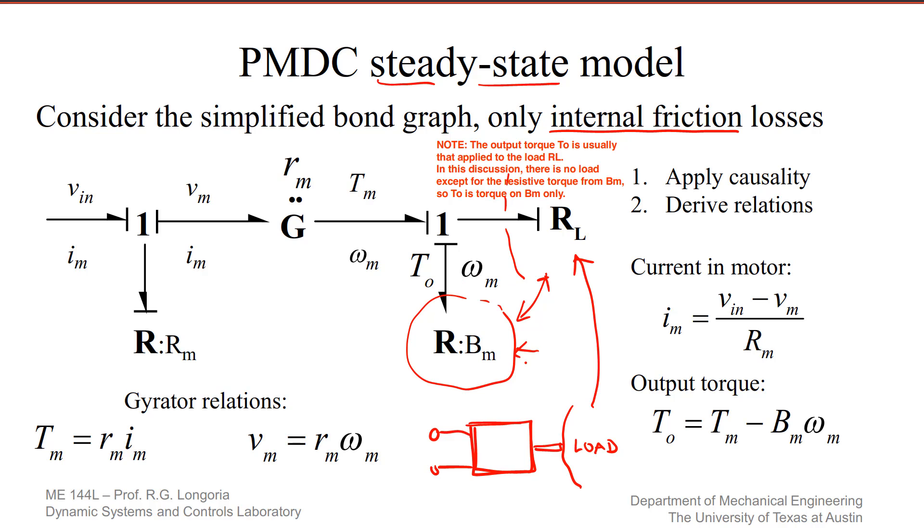Here are the gyrator relationships that we already talked about, the torque and the back EMF. Now, if you apply causality, if you're familiar with causality, you can then derive these relationships.